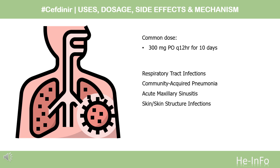Respiratory tract infections: Acute exacerbations of chronic bronchitis caused by H. influenzae including beta-lactamase-producing strains, H. parainfluenzae including beta-lactamase-producing strains, S. pneumoniae penicillin-susceptible strains only, or M. catarrhalis including beta-lactamase-producing strains. Pharyngitis and tonsillitis caused by Streptococcus pyogenes: 300 mg PO Q12HR for 5 to 10 days, or 600 mg PO Q24HR for 10 days.